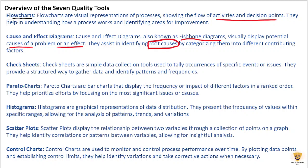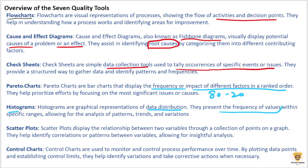Moving on, check sheets are simple data collection tools used to tally occurrences of specific events or issues. The next one is Pareto charts, based on the 80-20 rule, which display the frequency or impact of different factors in rank order. Histograms are graphical representations of data distribution and present the frequency of values within specific ranges, allowing for analysis of patterns, trends, and variations.